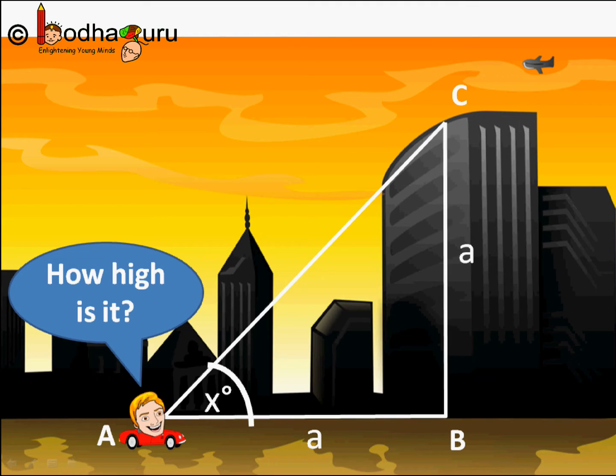So if angle A is 45 degree, angle B is the right angle 90 degree, angle C will be 45 degree, right? Because the sum has to be 180 degree.